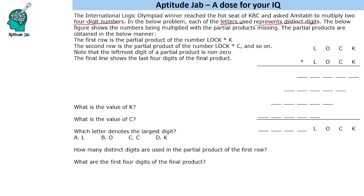What are partial products? The first row is the partial product of the number LOCK multiplied by k. If you multiply LOCK by k you get that as the product; similarly multiplying by c gives the next partial product, and so on for o and l. Finally you add all those partial products to get the final product. It is given that the leftmost digit of a partial product is non-zero, and the final line shows the last four digits of the final product.